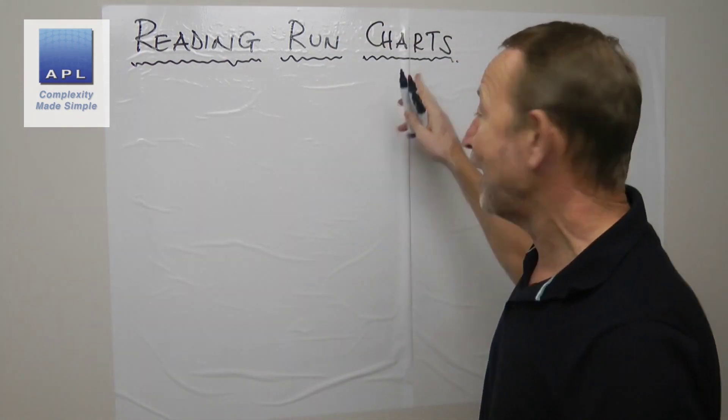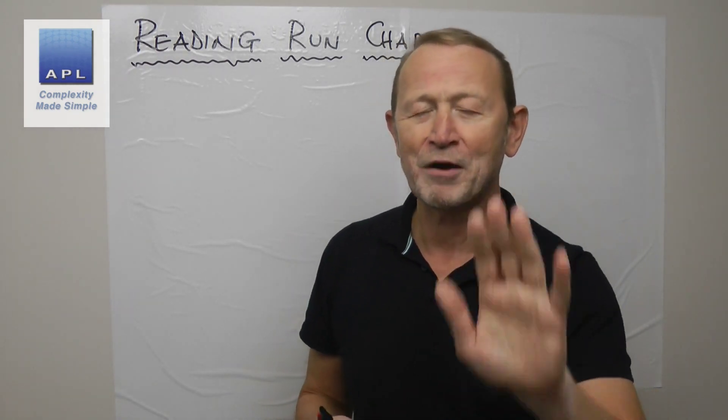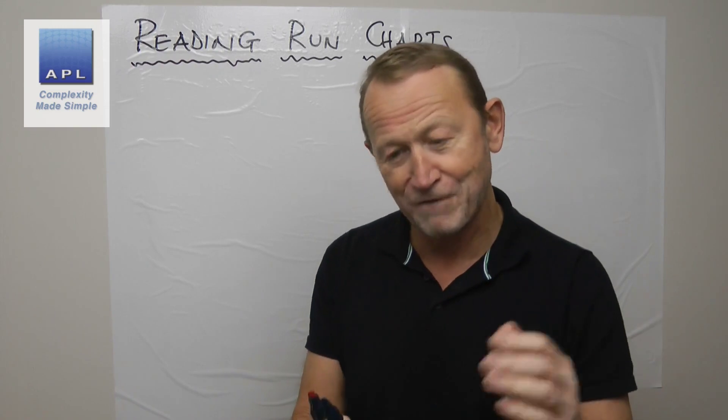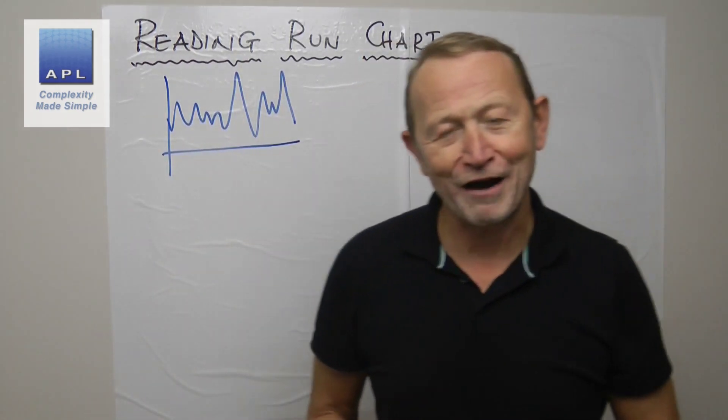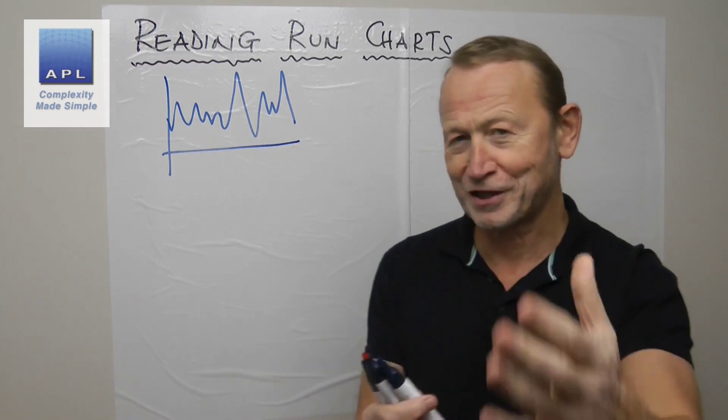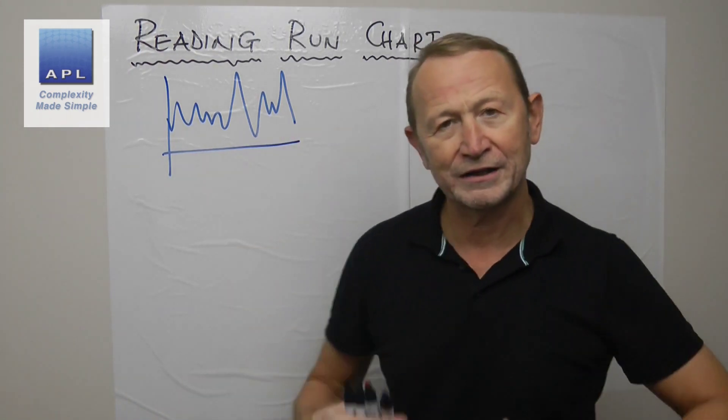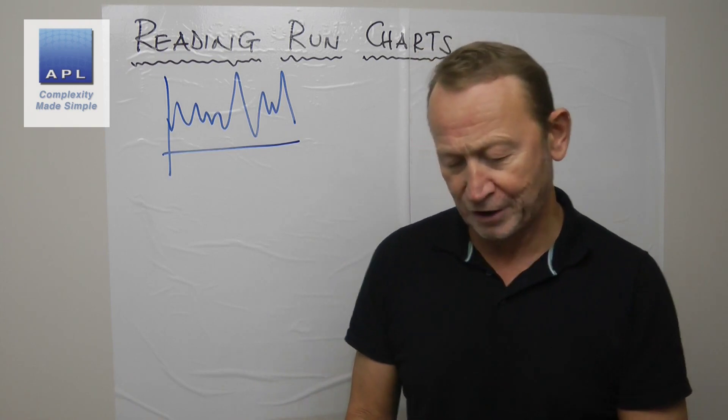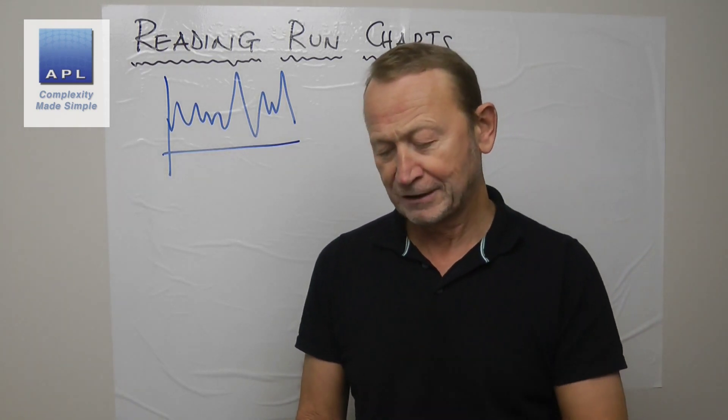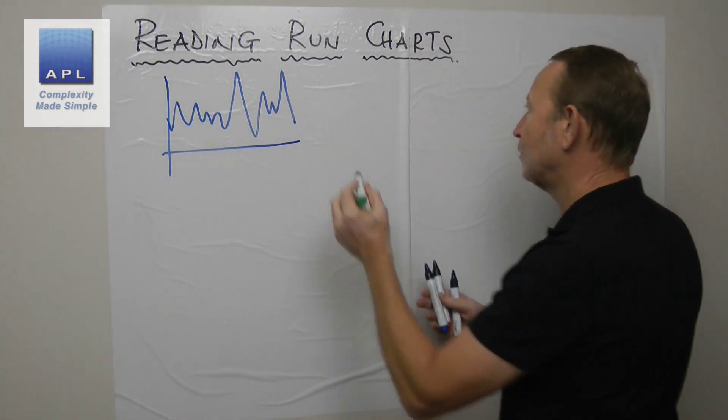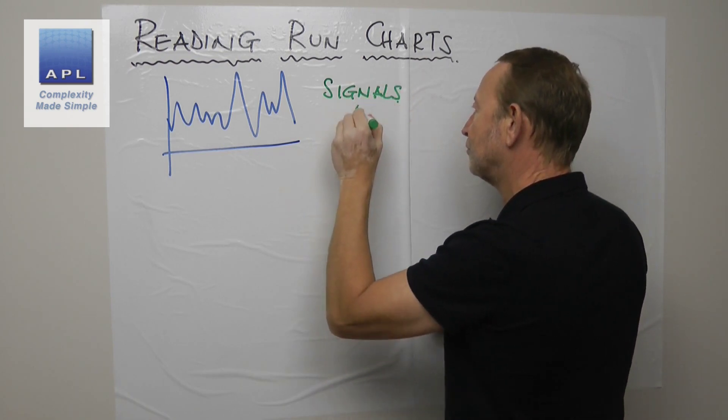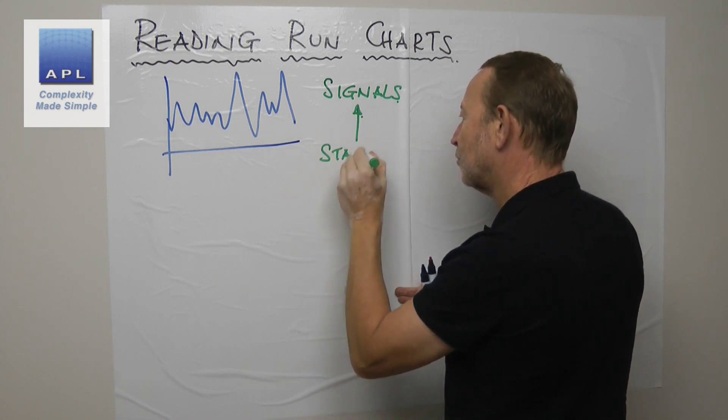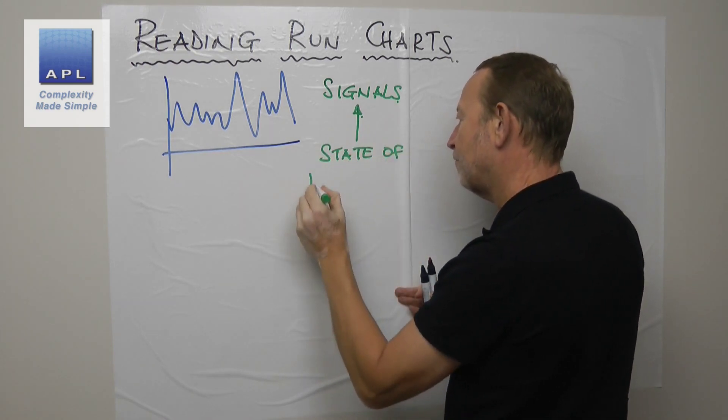First thing, please have a run chart, have a graph. Now I'm not a fan of block diagrams, I'm a fan of run charts - in other words a line graph. But then it's a case of, well okay, what are we looking for? So you're looking for signals, you're looking for signals which is the state of the physics.